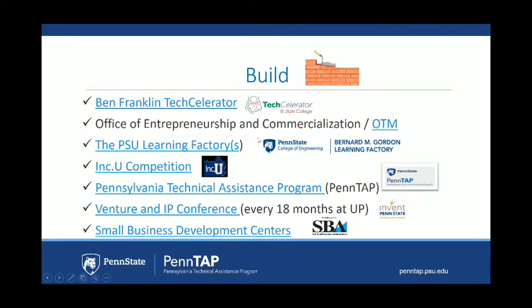The Penn State Learning Factory is the senior engineering design capstone course at Penn State — there are multiple learning factories around the state, including at the Behrend and Berks campuses. It's a 15-week semester-long program where we put teams of four to six engineering students to work on projects scoped by a company, either a startup or existing company with a specific problem. We do about 250 projects a year here at University Park. This isn't just for startups — it can also be applied to existing companies developing new products and needing engineering assistance, especially in the prototyping area. We can sometimes cover costs for startups and companies with financial difficulty, so don't let cost be a barrier.